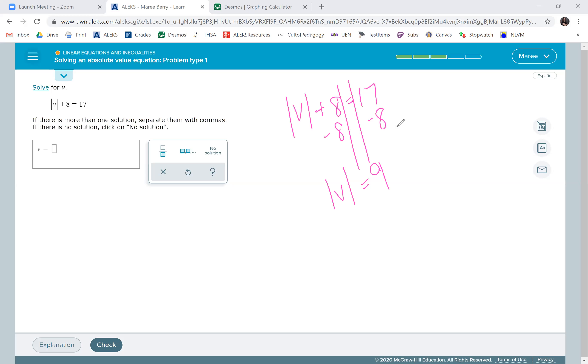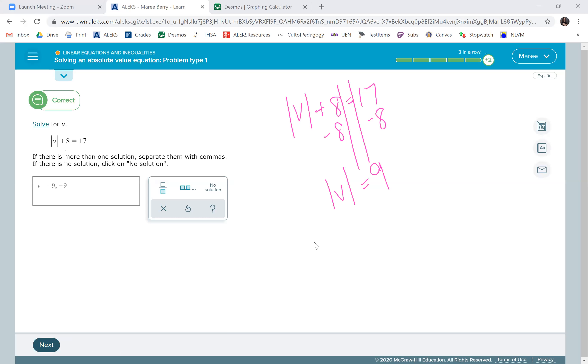So V has to be nine and negative nine. There's going to be two answers for this one because both of those numbers are nine units away from zero and our absolute value is nine. So we need to have both of them. Okay, that's the end of the lesson.